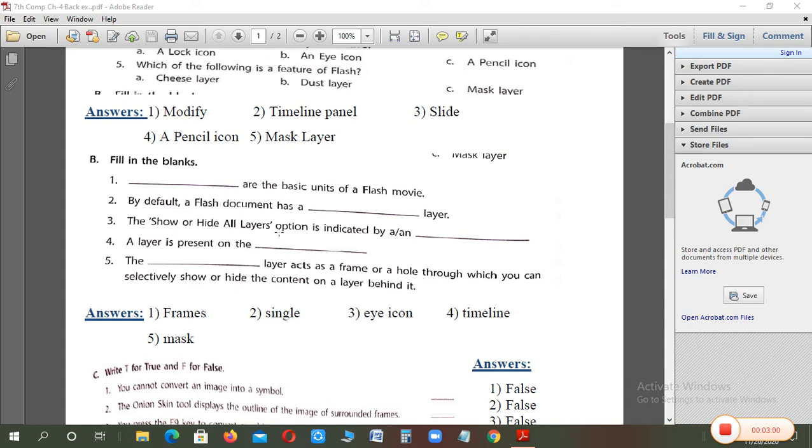The show or hide all layers option is indicated by blank. What is the thing that shows your layer is shown or hidden? Eye icon. A symbol is created by eye icon. The layer is shown or hidden by eye icon.